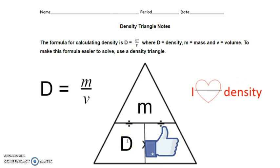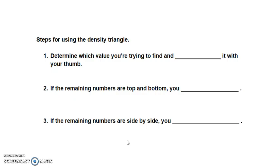Below your density triangle, let's fill in the blanks for the steps. Step one: determine which value you're trying to find and cover it with your thumb. Step two: if the remaining numbers are on top and bottom, you divide — look at the division symbol between them in the triangle. Step three: if the remaining numbers are side by side, there's a multiplication symbol, so you multiply.